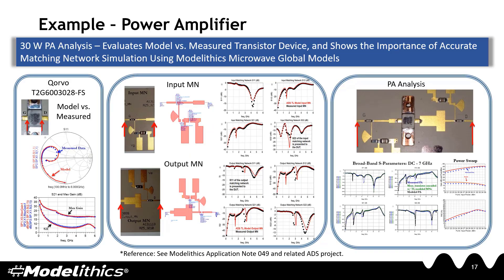In this example, we go over a 30-watt power amplifier analysis. On the left-hand side, we first compare measured data for a Corvo transistor device against the Model Ethics nonlinear model available in our Corvo GAN library. Next, we compare simulations of the input and output matching networks against measured data. Finally, on the right-hand side, we perform a complete analysis of the power amplifier combining the input and output matching networks along with the nonlinear transistor model to perform a broadband S-parameter sweep as well as a power sweep. Note the excellent correlation between simulation and measurement for both.